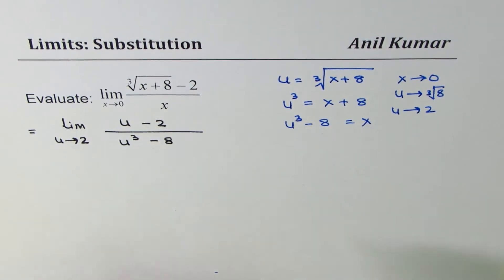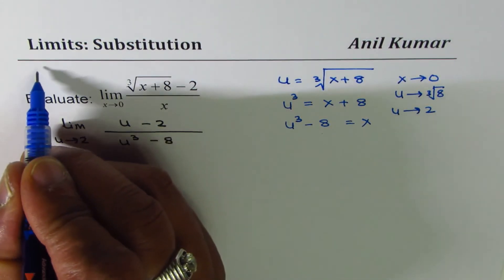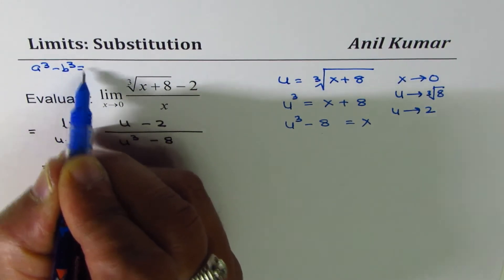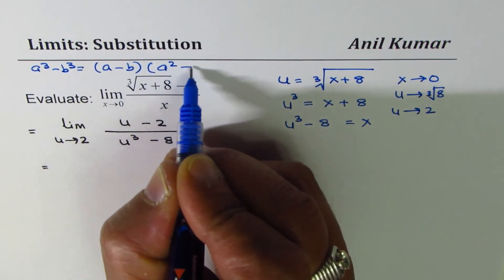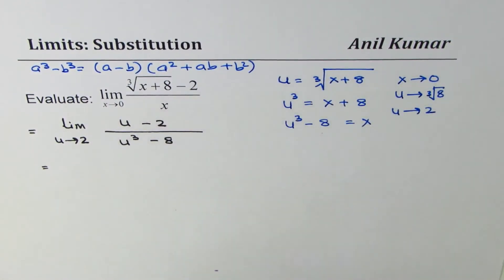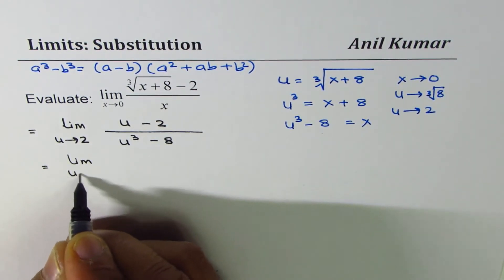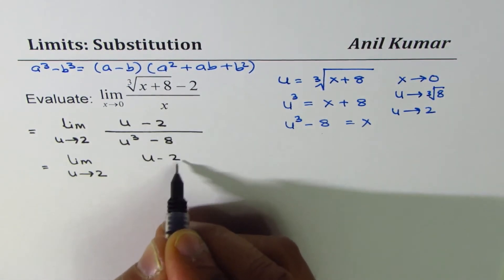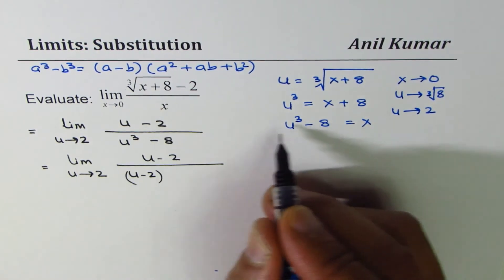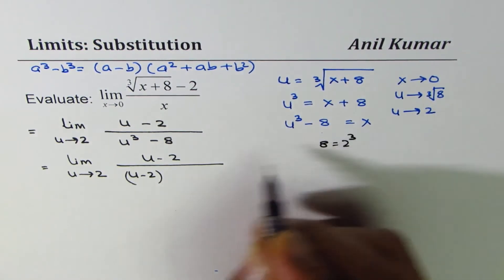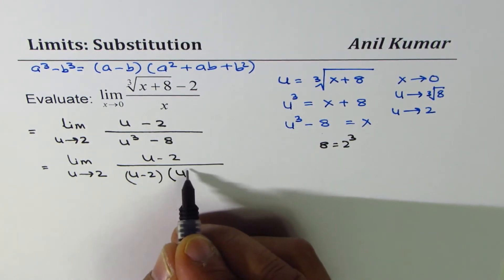Now we can factor using the formula: a³ minus b³ equals (a minus b)(a² + ab + b²). So we get: limit as u approaches 2 of (u minus 2) in the numerator, and the denominator is (u minus 2)(u² + 2u + 4), since 8 is 2 cubed.